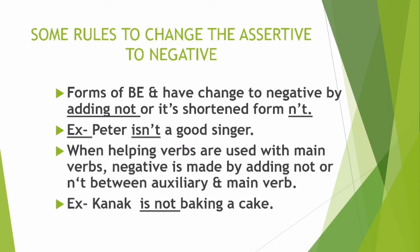Here are some rules to change assertive — also called declarative — sentences to negative. First, forms of 'be' and 'have' change to negative by adding 'not' or its shortened form 'n't.' Forms of be are: is, am, are, was, were. Forms of have are: has and had. Like 'Peter isn't a good singer' or 'Peter is not a good singer' — both mean the same.